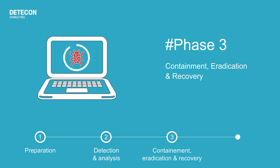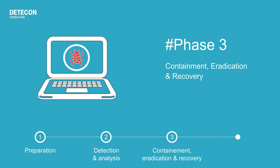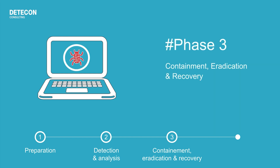The next step is to quickly and efficiently limit the incident's impact and prevent further damage. During containment, analysts isolate affected systems, block attacker communication and restrict the incident's spread. In the eradication step, analysts completely remove the attacker from the system by removing malware, closing vulnerabilities and blocking all unauthorised access. Finally, recovery activities restore affected systems, data and services to normal operations.